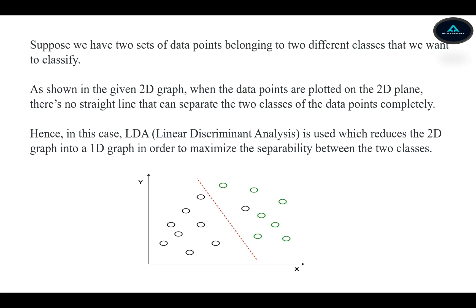Suppose we have two sets of data belonging to two different classes that we want to classify. As shown in this diagram, when the data points are plotted in the 2D plane, there's actually no line that separates the two classes of the data points completely.